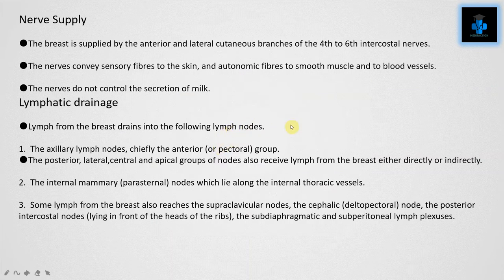Now let's learn about the nerve supply. The breast is supplied by the anterior and lateral cutaneous branches of the fourth to sixth intercostal nerves. The nerves convey sensory fibers to the skin and autonomic fibers to smooth muscle and to the blood vessels. The nerves do not control the secretion of milk.